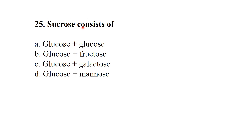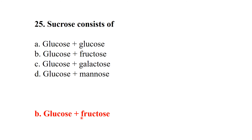Sucrose is a disaccharide consisting of two monosaccharides — it is composed of glucose and fructose. Option B: glucose and fructose are the two monosaccharide monomers of sucrose.